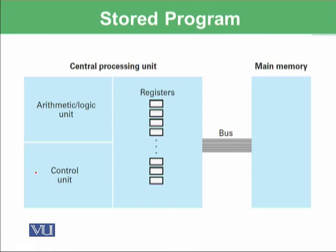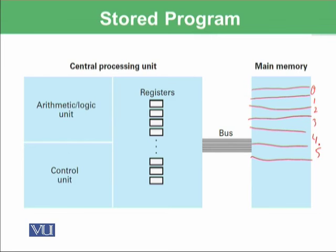What we will do is store the program here in the main memory. Main memory has addresses — for example, 0, 1, 2, 3, 4, 5. Our previous addition algorithm has five steps, so the first instruction is stored at address 0, the second at address 1, third, fourth, and fifth follow. All instructions are stored in main memory, and then those instructions are fetched using the bus to the central processing unit, where special-purpose registers hold the machine instruction.